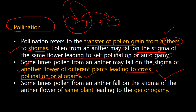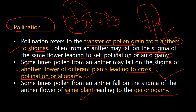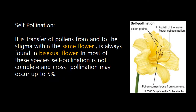Sometimes pollen grains from an anther may fall on the stigma of another flower of the same plant, leading to geitonogamy. So you have a plant with two flowers, and the pollen grains fertilize the stigma of another flower on the same plant. If it occurs in the same flower, it is self-pollination; when two different flowers of the same plant are involved, it is called geitonogamy.